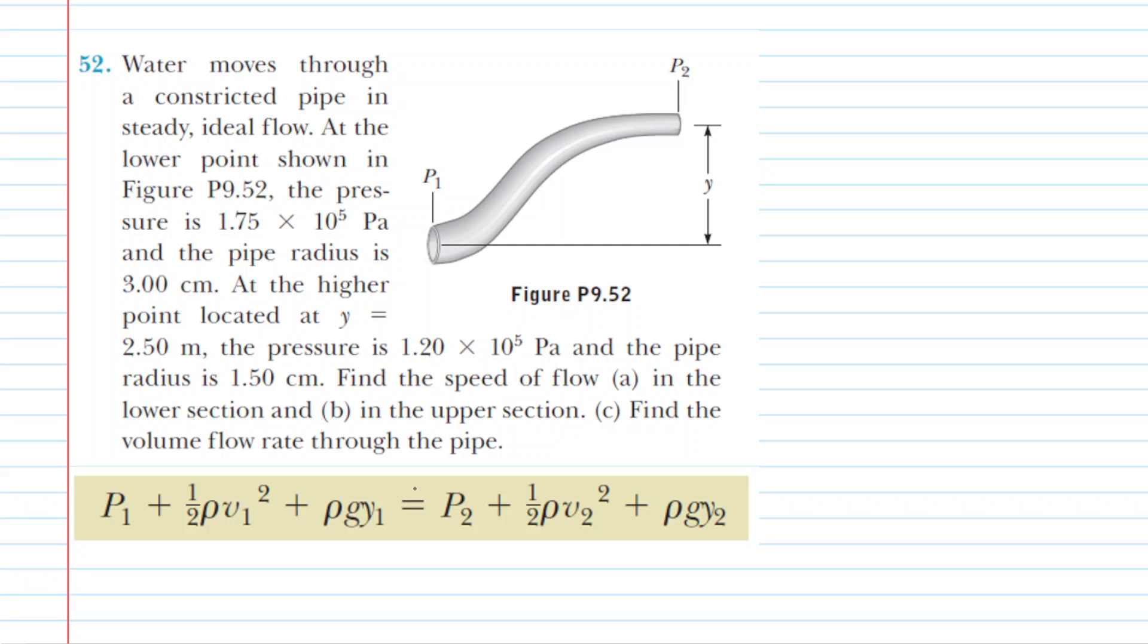To use Bernoulli's equation, we have to write down all of the known values. So let's go digging for those values. We're going to start at the left side of this constricted pipe and write down the pressure at that location. The question states that the pressure at the left side of the pipe, also known as P sub 1, was equal to 1.75 times 10 to the power of 5, and that's measured in pascals.